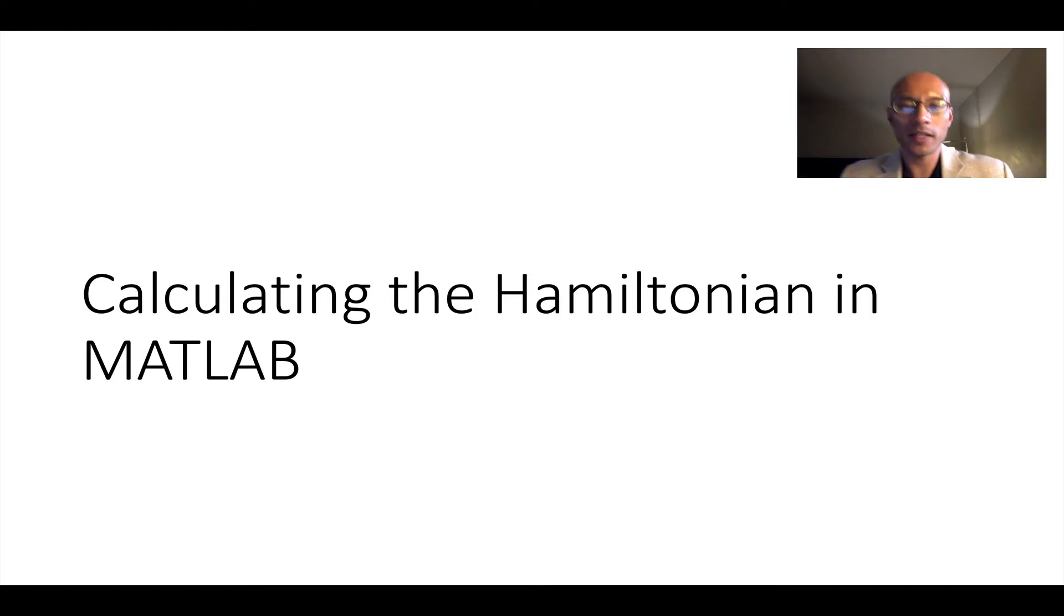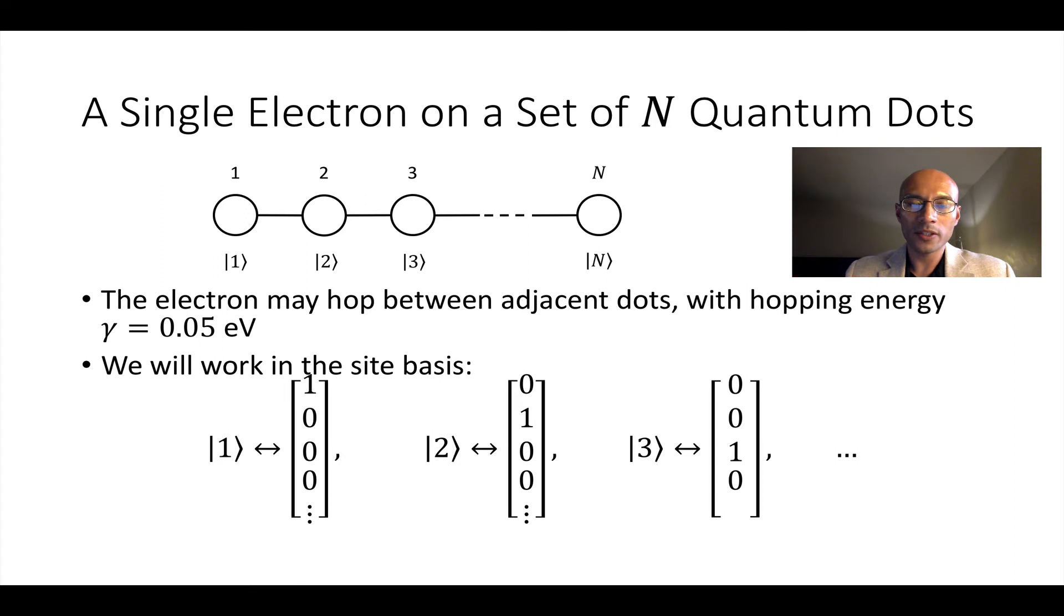Now let's demonstrate a calculation of the Hamiltonian in MATLAB. Let's do a different sort of example. Now, instead of two quantum dots, we're going to have n quantum dots. There are no external charges. There's just one electron that can hop between the adjacent dots. We're going to assume it has hopping energy gamma. And we're going to work in the site basis. So let's go to MATLAB now.